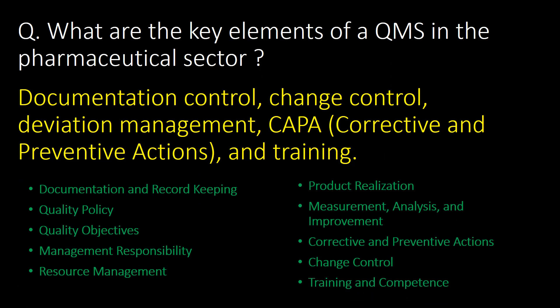What are the key elements of a QMS in the pharmaceutical sector? Documentation control, change control, deviation management, CAPA (that is, corrective and preventive actions) and training are the key elements of a QMS. Below is the list of 10 key elements of a QMS in the pharma industry.